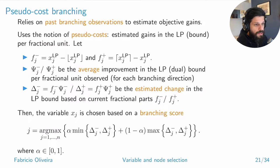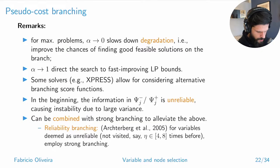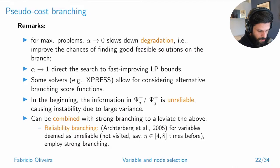This basically tells you whether to look at the minimum or maximum of the variations, or something in between. There is a trade-off: when alpha is set to zero, you always pick the maximum possible variation in your dual bound, which slows down degradation.